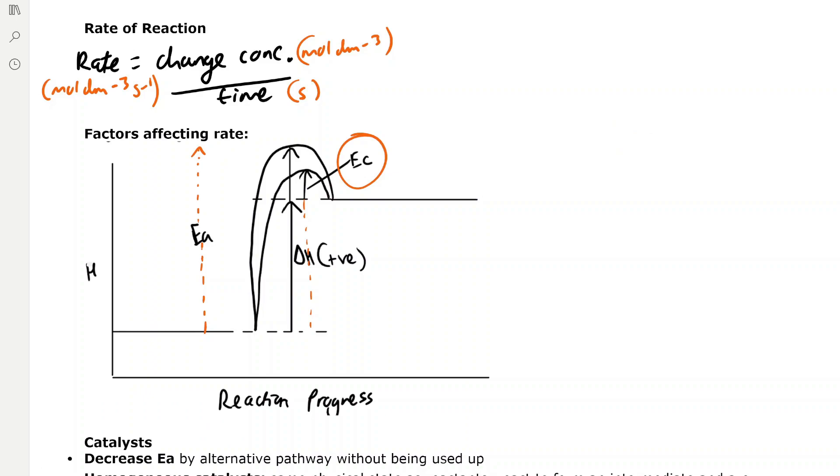We can determine the rate of reaction using this equation. The rate is equal to the change in concentration over time, and the units that we use for rate is mole per dm cubed per second, because the change in concentration is measured in mole per dm cubed, and the time is measured in seconds.